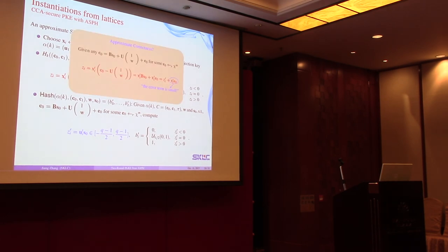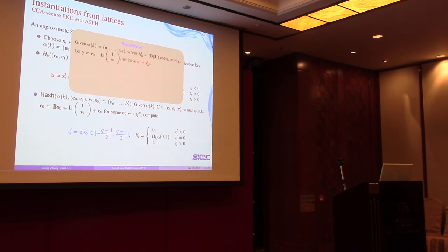For correctness, for any correctly generated ciphertext, we can always convert C0 as this equation. This means that if we subtract this part, we will get this one, and this means that ZI and ZI prime are equal up to some small errors. This allows us to show the approximate correctness of our approximate SPH.